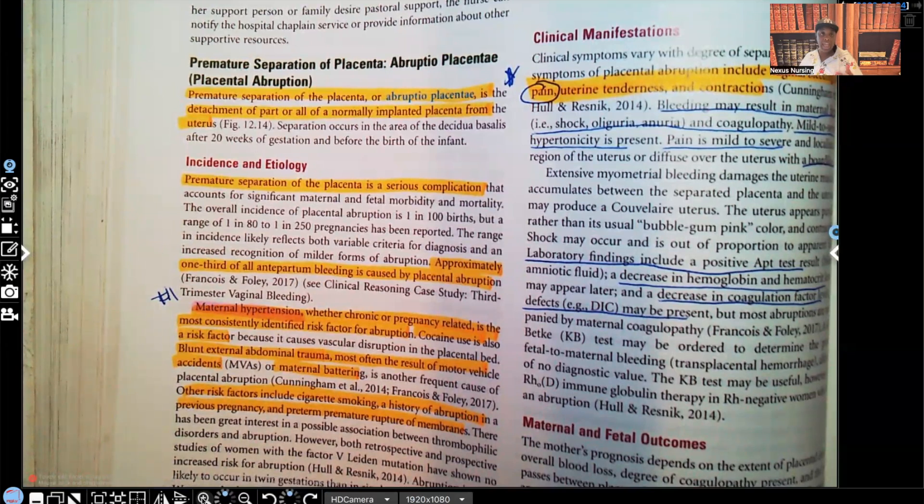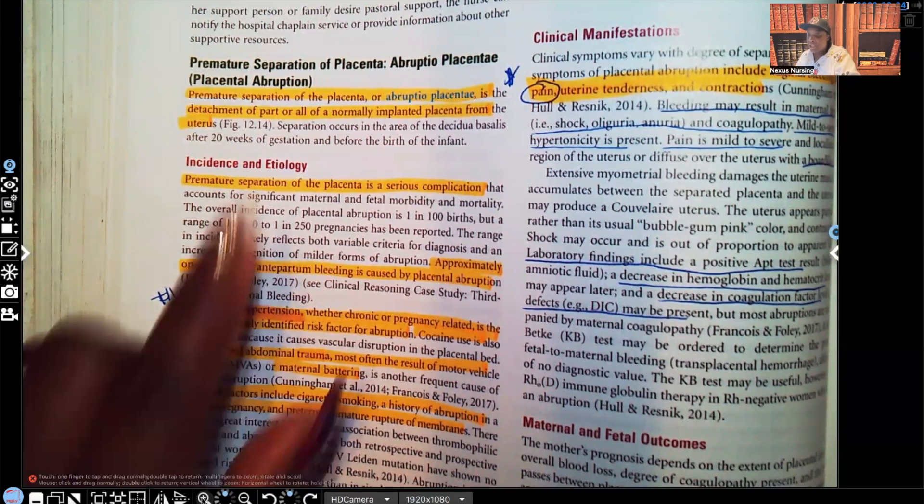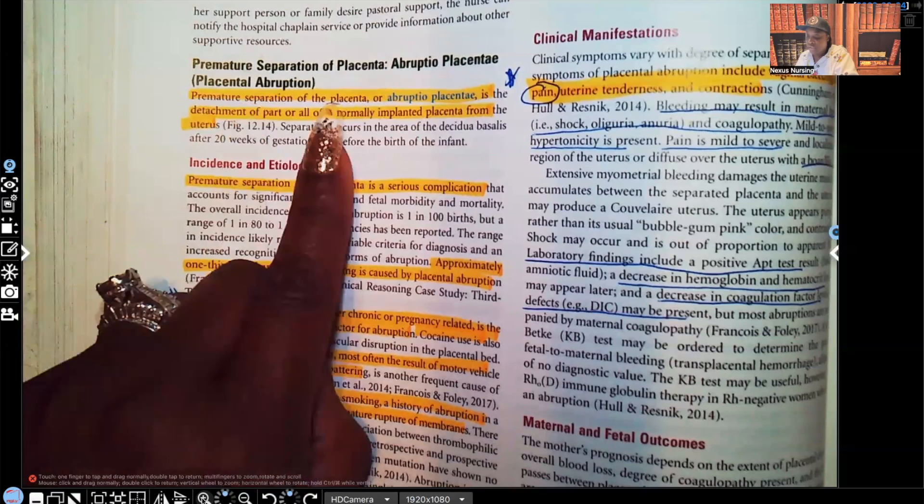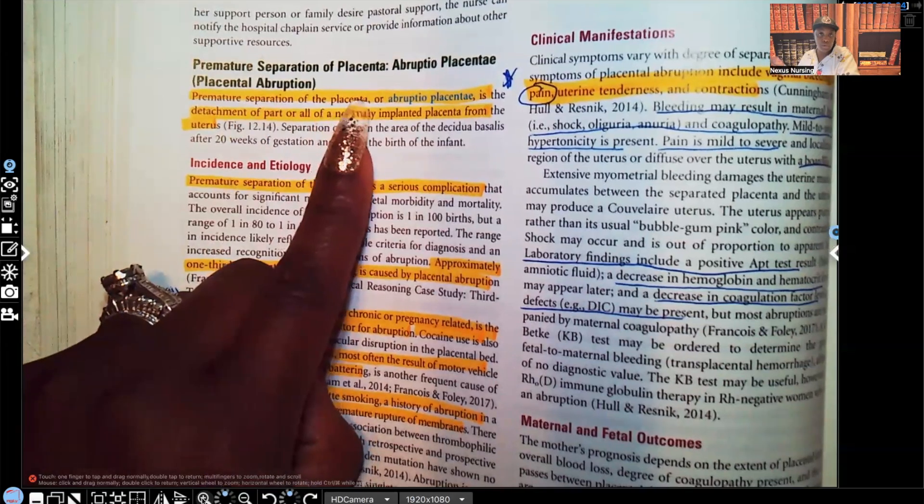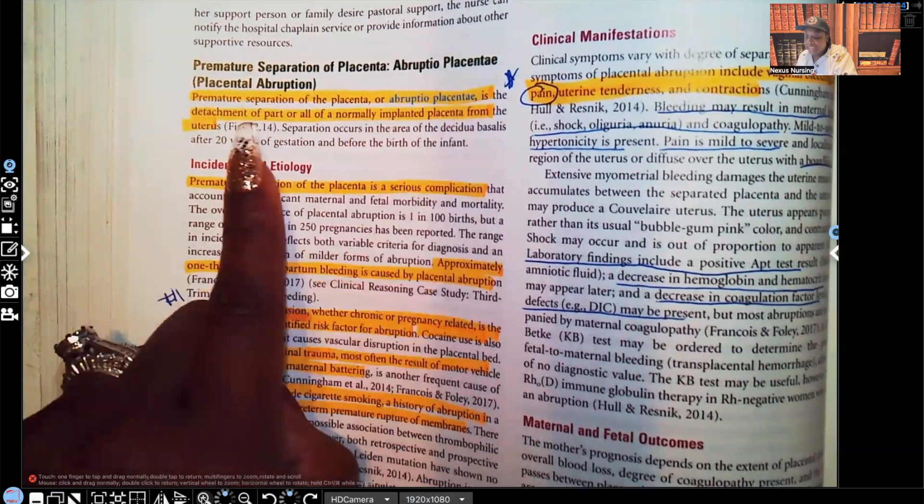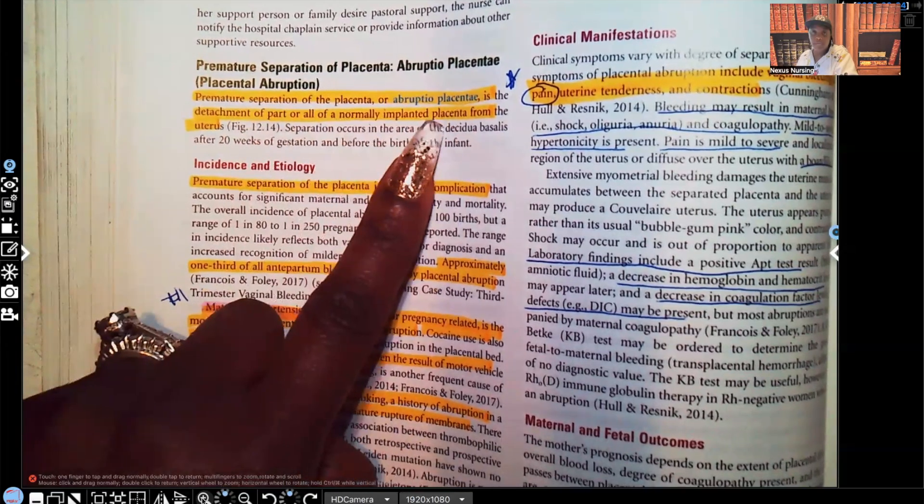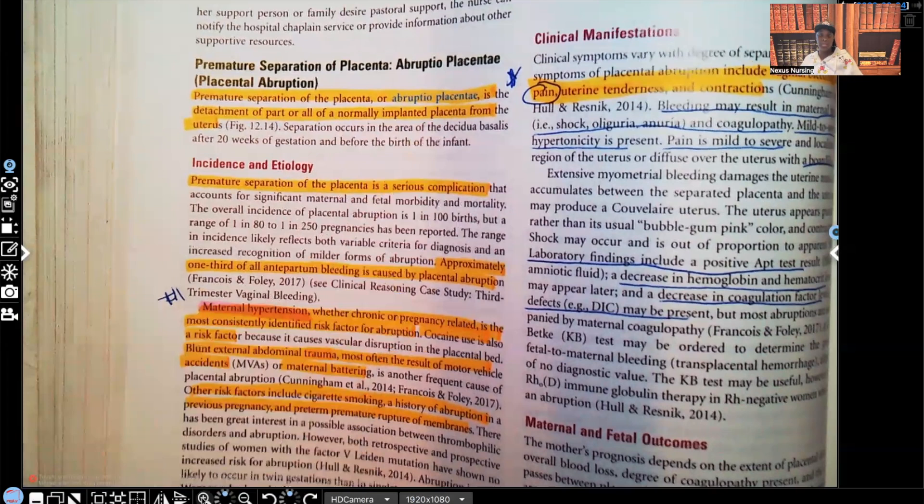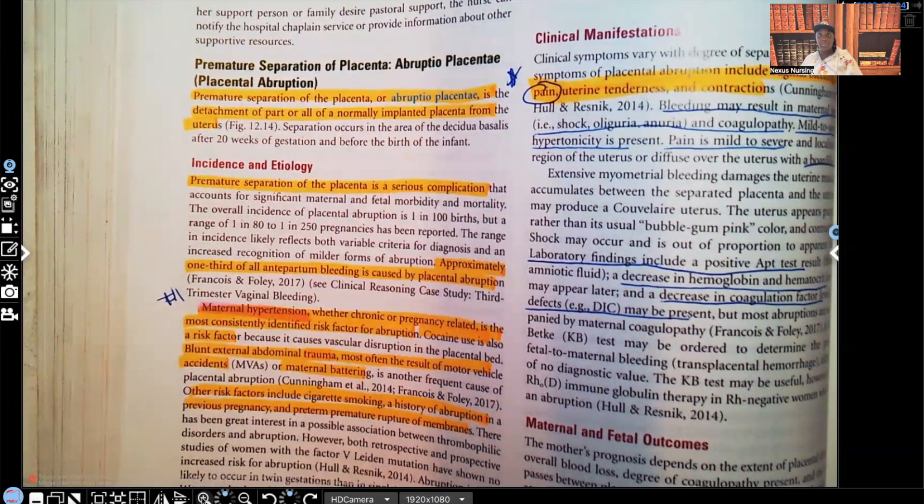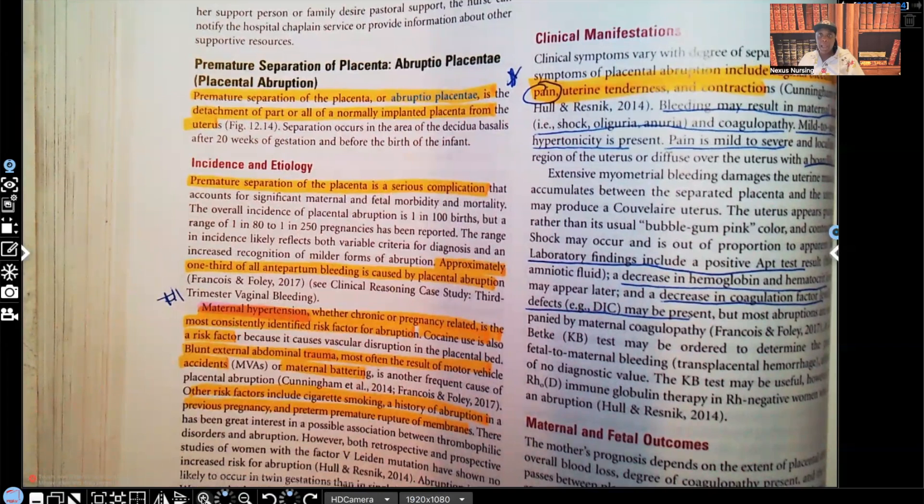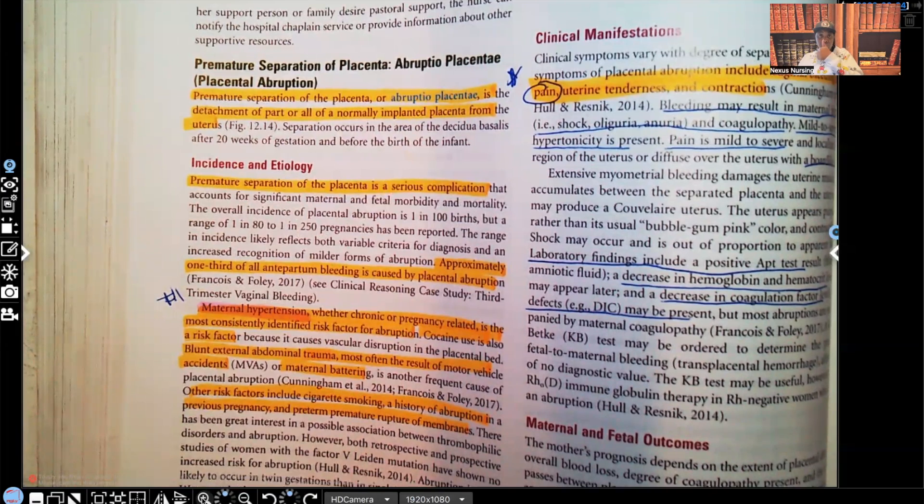So let's take a look. Abruptio placenta, also known as placental abruption. This is premature separation of the placenta. It's detachment of part or all of the normally implanted placenta from the uterus. Why is this a problem? It's a problem for the fetus because once that placenta separates from the uterus, the oxygen is cut off, the nutrients are cut off from the fetus.